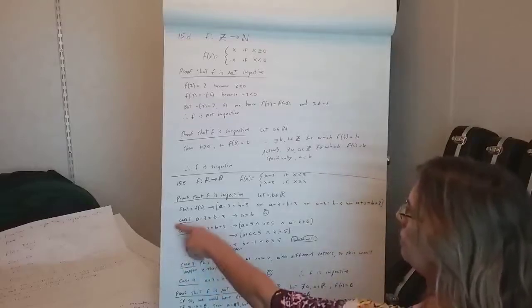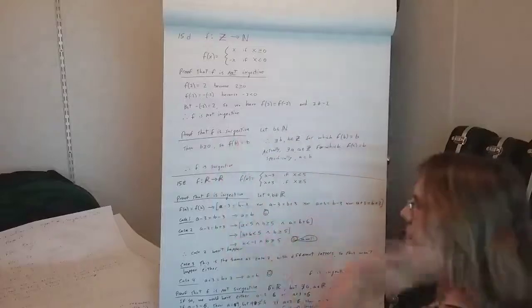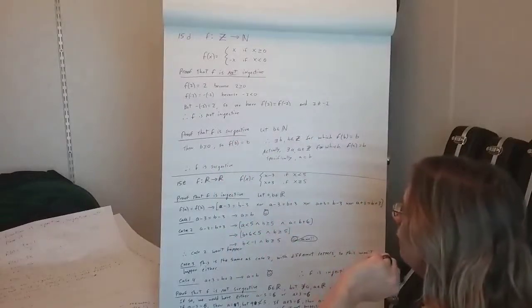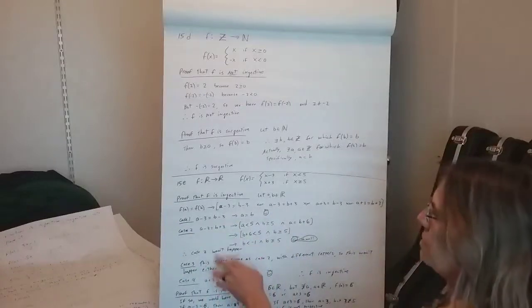Okay, so case 1, if a minus 3 equals b minus 3, just add 3 to both sides, a equals b, woohoo. And then case 4 is going to be the same thing, just subtract 3 from both sides.